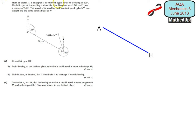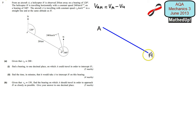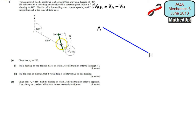What we want to do is make H our observer, and we are going to say that the velocity of A relative to our observer H is going to be equal to the velocity of A take away the velocity of H. So H is our observer, and everything is going to be observed at A being observed by H.